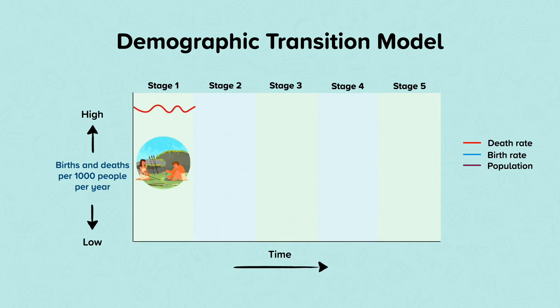In stage one, early societies had high death rates which fluctuated over the years. Birth rates were similarly high. For these reasons, this stage is known as high fluctuating. The high death rates meant that the population stayed fairly low and steady. This is no surprise since during these times there was no sanitation in the form of toilets, and water was not always from a clean source. Medicine was also extremely limited.